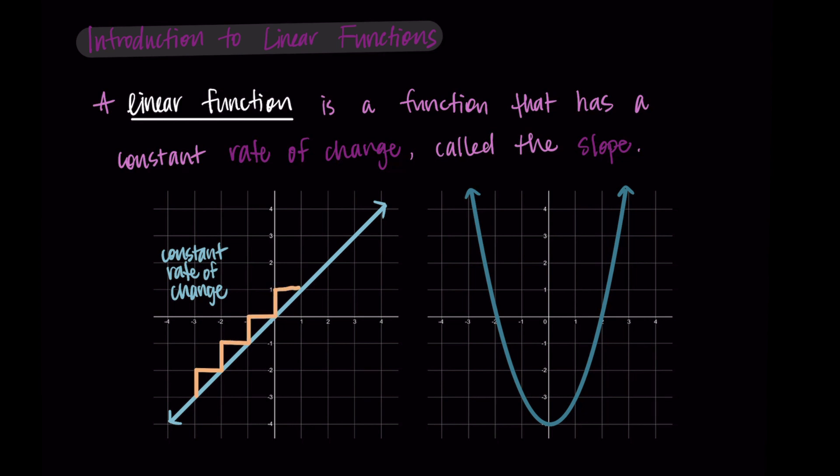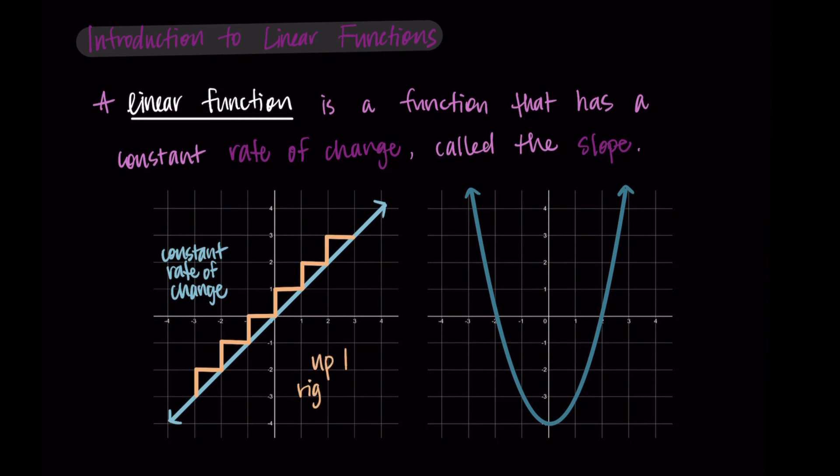What this means is that if we look from left to right, as we take one step up on the graph, we go one step to the right. Then we go one step up, one step to the right, one step up, one step to the right, and this repeats itself. So this rate of change as we move from left to right is constant. It's never changing.